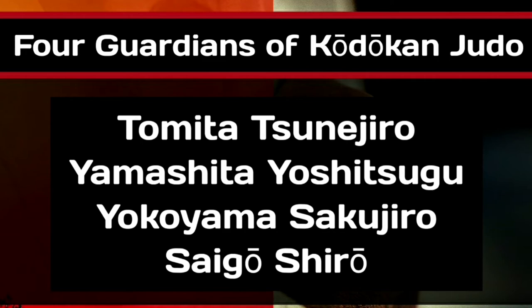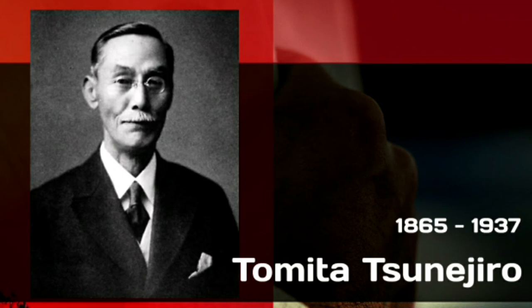Tomita Tsunegiro was known as one of the four guardians of Kodokan Judo for his victorious efforts in competing against Jujutsu schools. Upon his death in January 13 of 1937, he was awarded the 7th Dan rank.